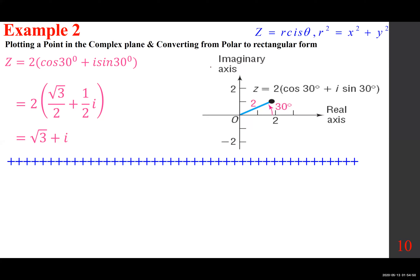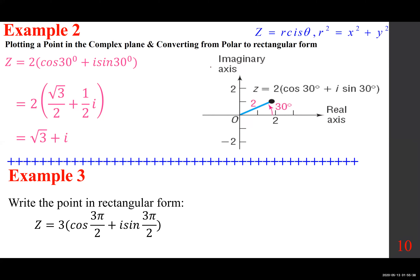There are really two ways to plot that. You can plot it right in the beginning by making up the angle of 30 degrees and then two tick marks — that would be the point. Or come up with the rectangular form: square root of 3 plus i means square root of 3 along the real axis and positive one along the imaginary axis.